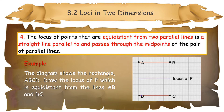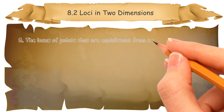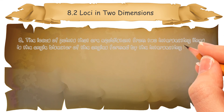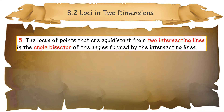Five: the locus of points that are equidistant from two intersecting lines is the angle bisector of the angles formed by the intersecting lines.